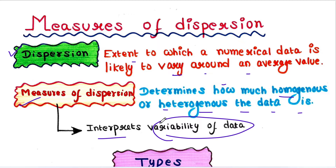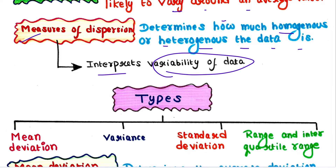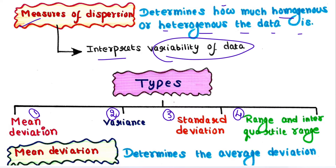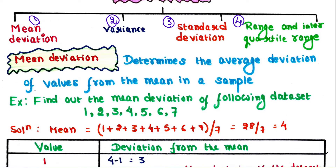Let's talk about the types of measures of dispersion. There are four main types: the first one is mean deviation, second is variance, third is standard deviation, and fourth is range and interquartile range. Let's talk about them one by one.